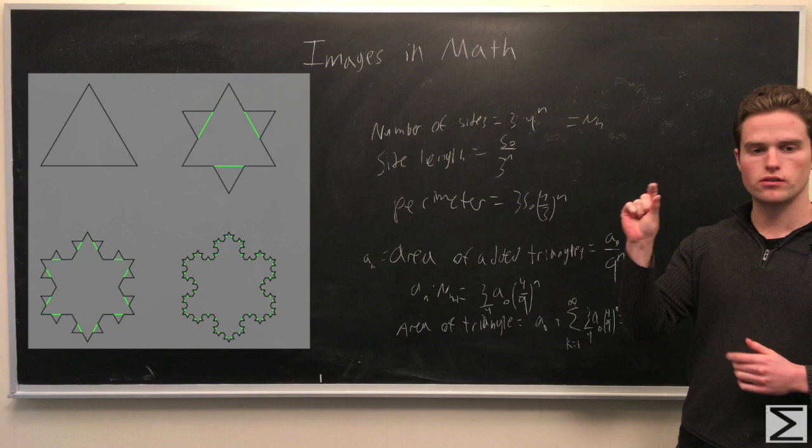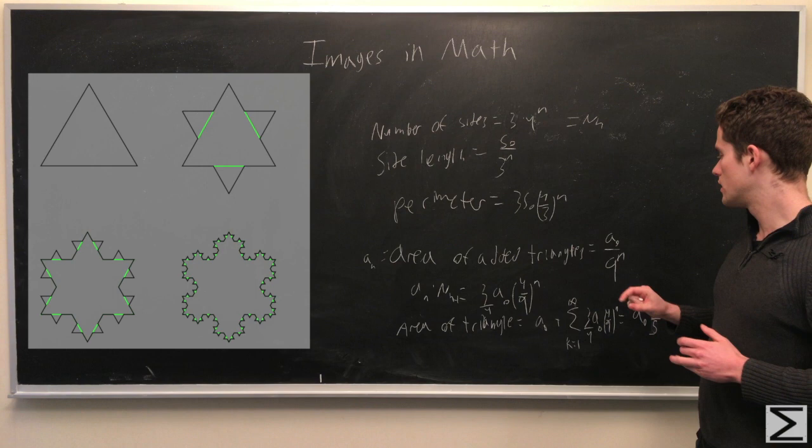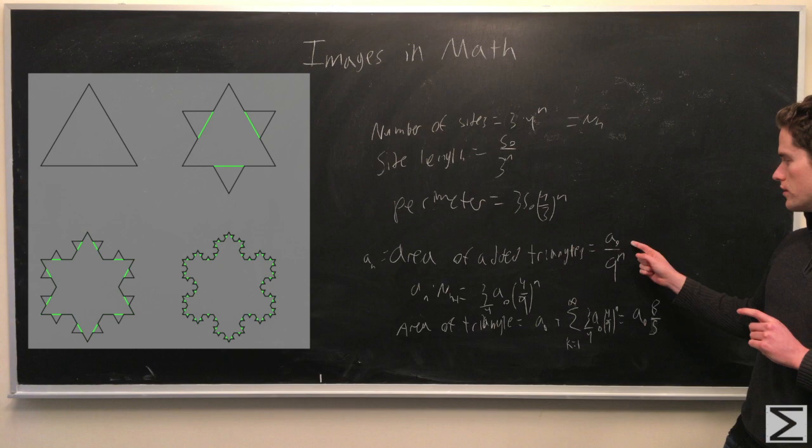note that it's built on the edges of the previous little triangles, but it's 1 third the edge length, so it's 1 ninth the area. So each time we 1 ninth the area of each little triangle. So the area of each added triangle is the initial area over 9 to the n, the nth iteration.